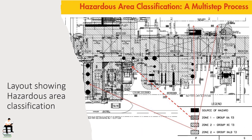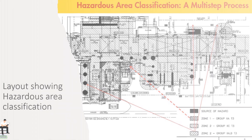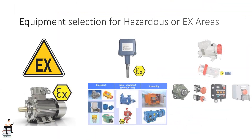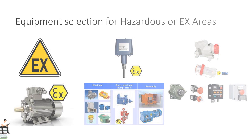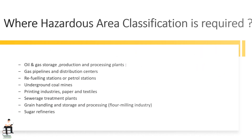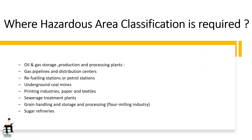Depending on the type and likelihood of the presence of explosive atmosphere or combustible dust, different electrical equipment is selected for particular areas. Hazardous area classification is required in all industries handling flammable liquids, gases, or combustible dusts.